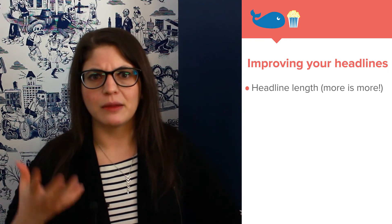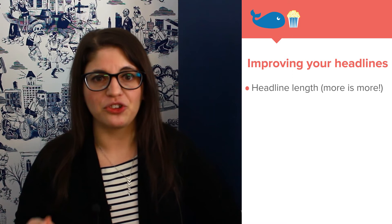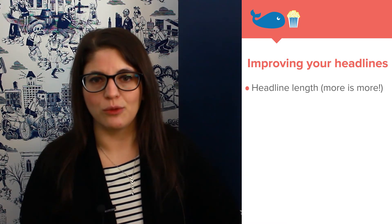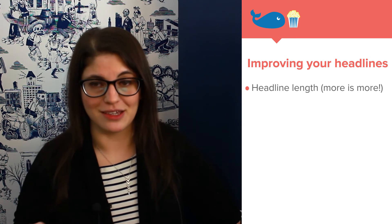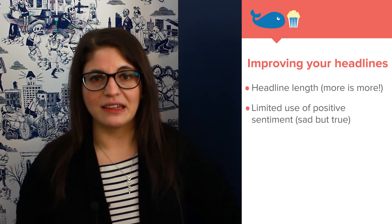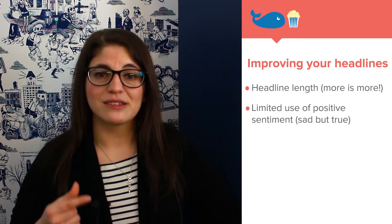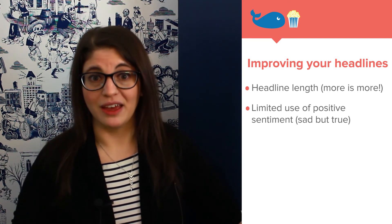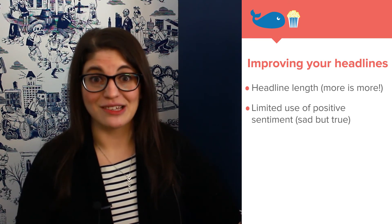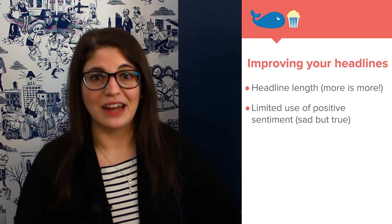One of the things we love about Sharethrough is that they not only give you a grade for your headline, they tell you how to improve that grade. One of the most common pieces of feedback they give is to lengthen your headline — the more the merrier, and it's a great opportunity to play around with longer-tail keywords that may be useful for an overall SEO strategy. They also recommend a limited use of positive sentiment. The key is to present a solution to whatever problem you are describing — hopefully a solution that your organization is working towards and that the reader can help get in on.